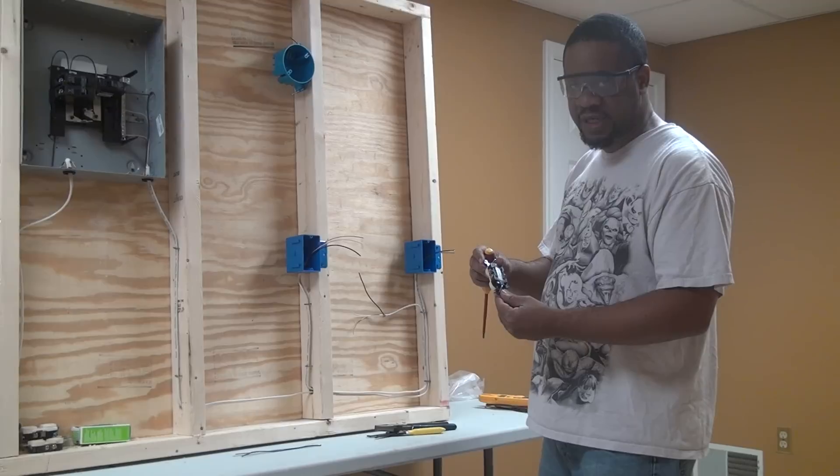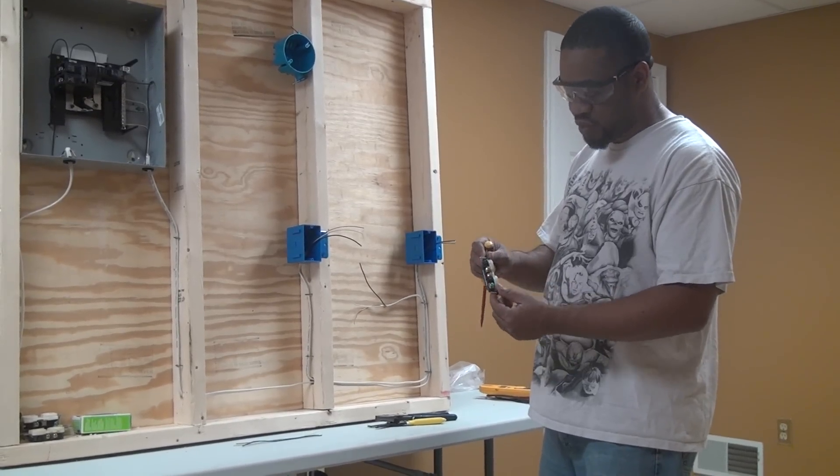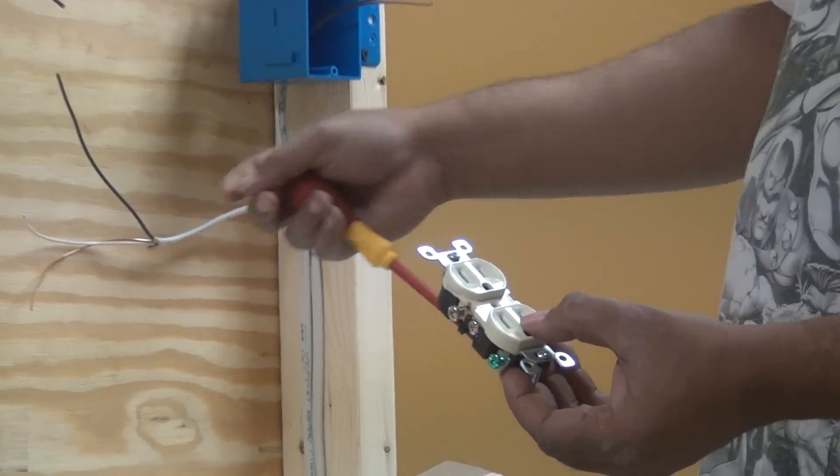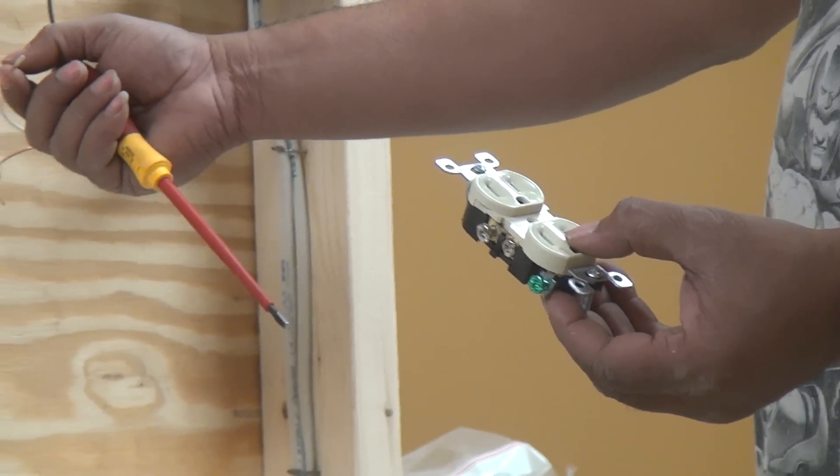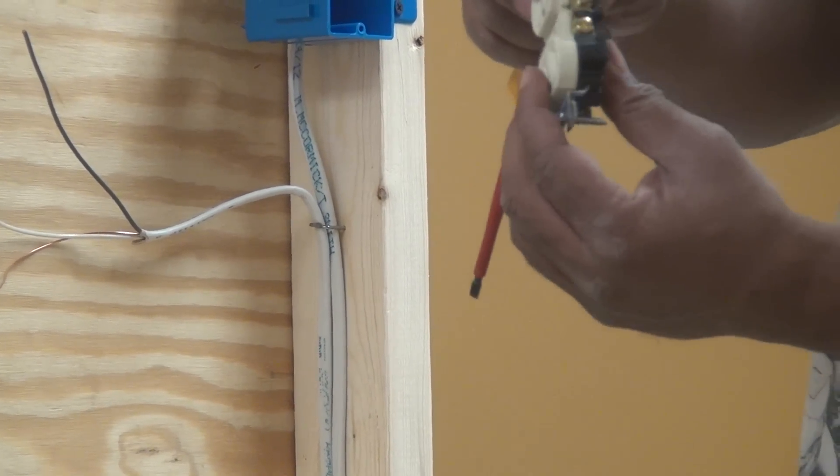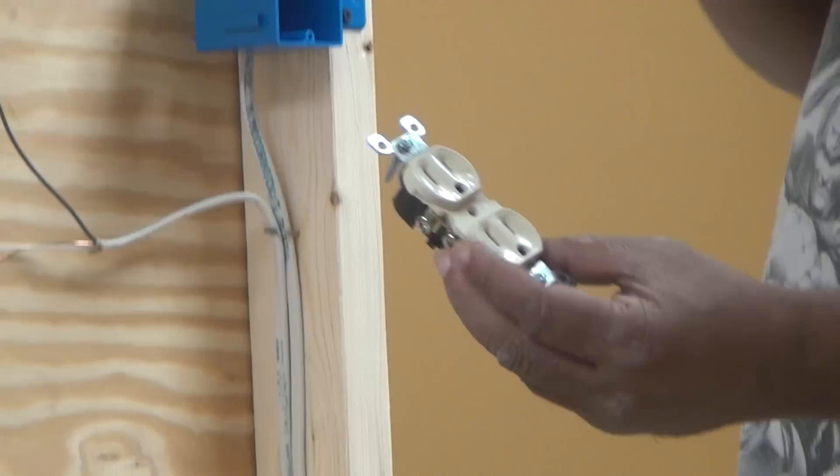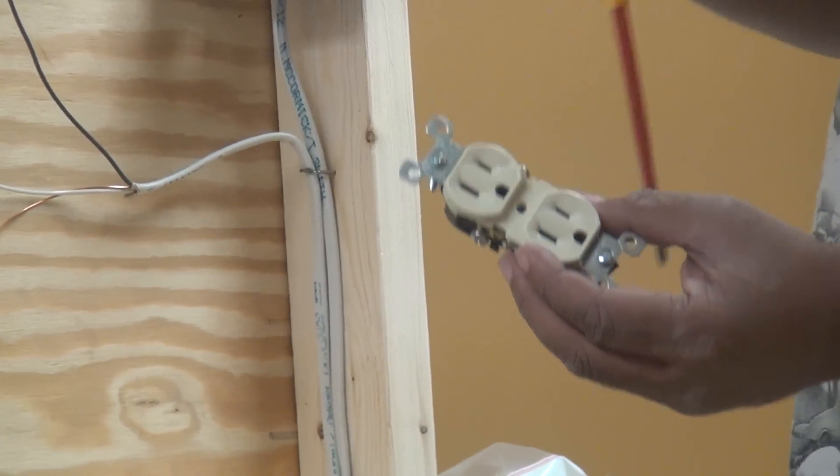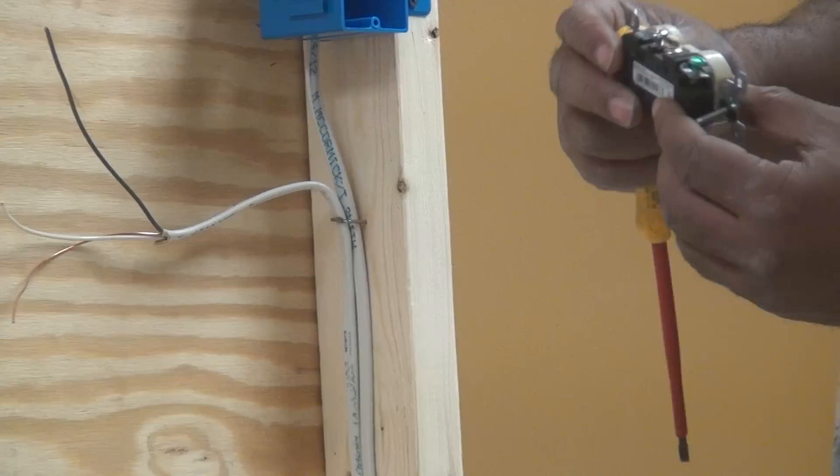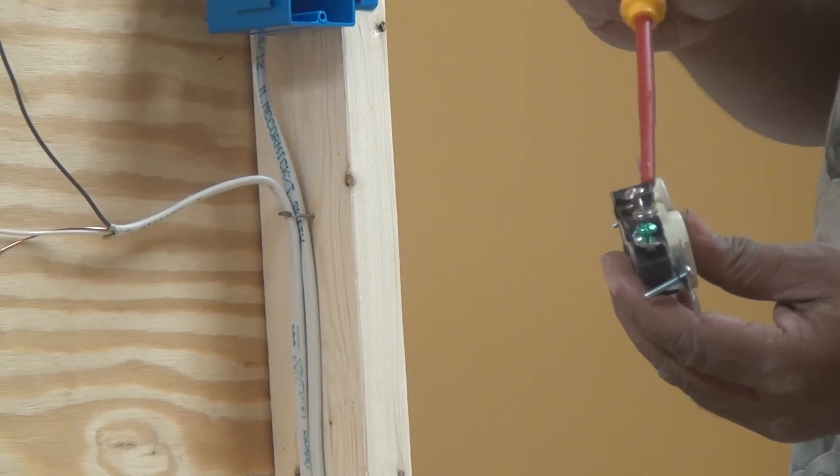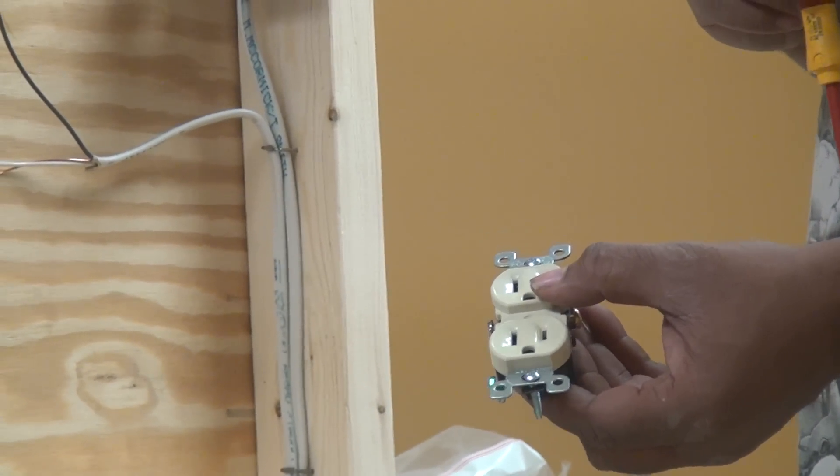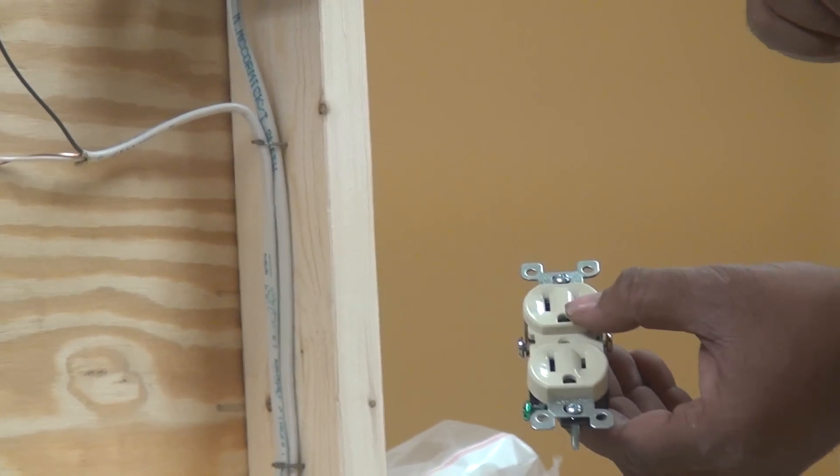the screws on the outlet are also colored. If you notice, one is silver, which connects to the neutral side, or that's where your white wire is going to go, the neutral or the grounded conductor. And the other side is bronze, or goldish-looking color. That's connected to the short side of the receptacle, or the ungrounded conductor, or the hot wire. That's where your black wire is going to go. And the green screw is connected to the little circular part here, which is your ground, or your equipment ground, or your grounding conductor.